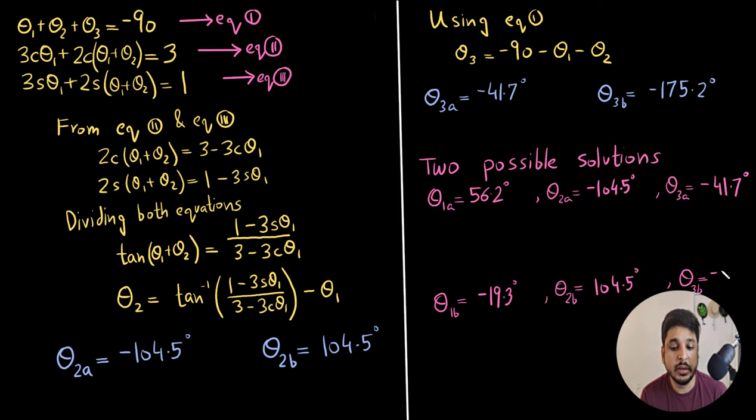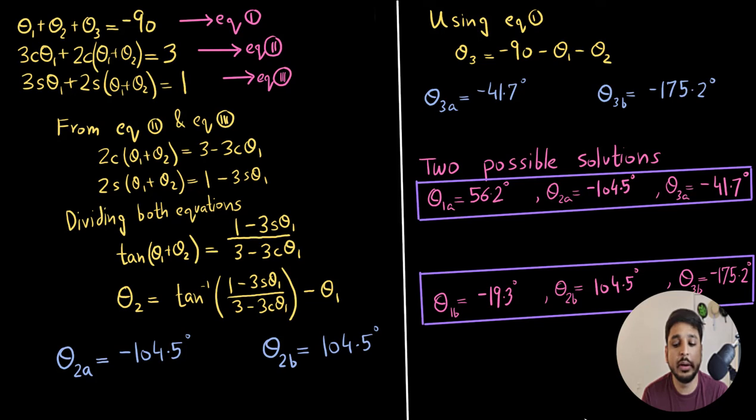And the second solution has theta 1b as minus 19.3 degrees, theta 2 as 104.5 degrees and theta 3 as minus 175.2 degrees.